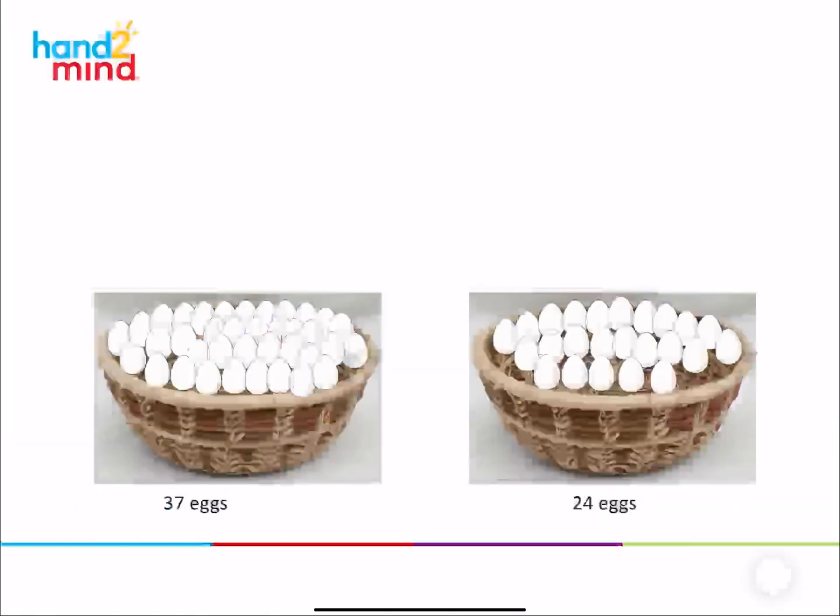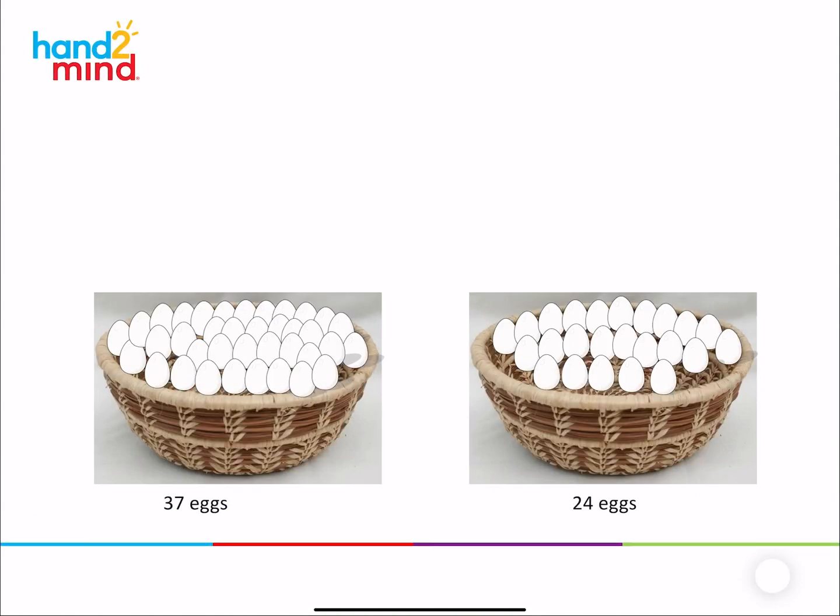So today we're going to begin by looking at this picture of eggs. First thing I want you to look at is, what do you notice? What are some things you notice? I wonder if you noticed that there were two baskets. And I wonder if you noticed that there were 37 eggs in this basket and 24 eggs in this basket. So what if I was to ask you, how many eggs do we have in both baskets together? What would you do? Did you say you would put those together or you would add those together? So you might add 37 plus 24. And if you add 37 plus 24, what do you get? Did you say 61?